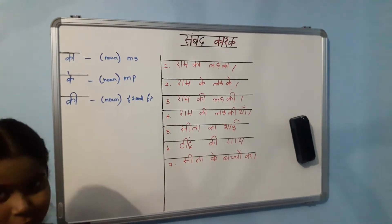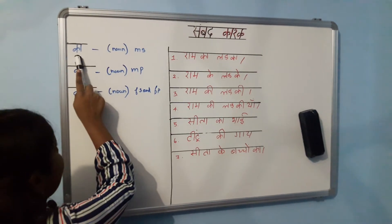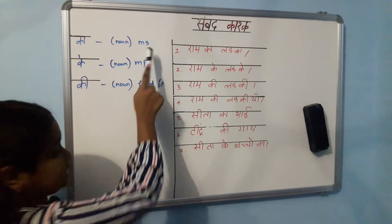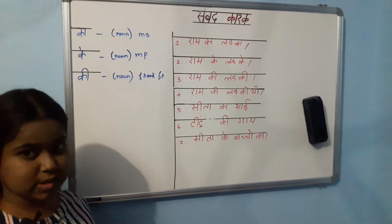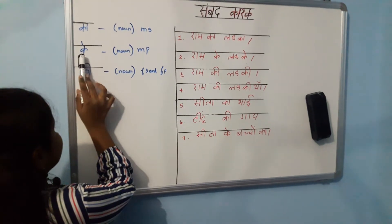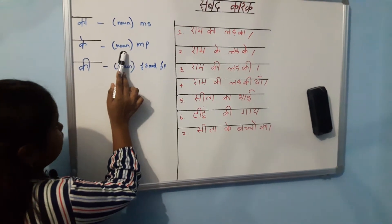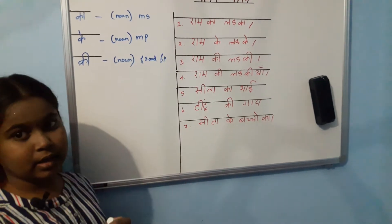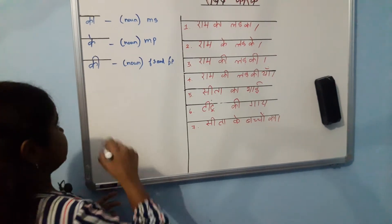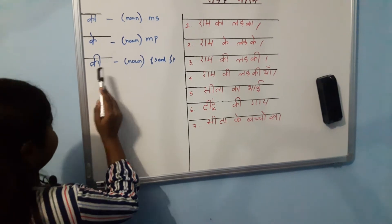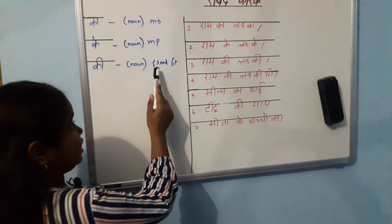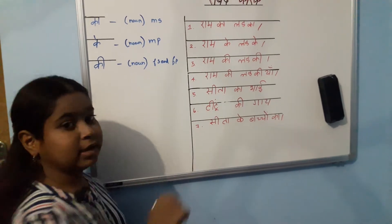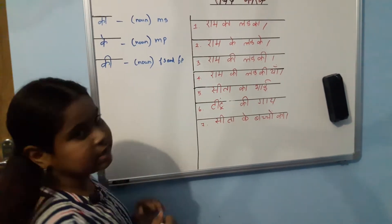Here are the rules. When the noun is masculine singular, 'Kha' is used. When the noun is masculine plural, 'Kha' is used. For 'Khi', when the noun is feminine singular and feminine plural, 'Khi' is used for both.